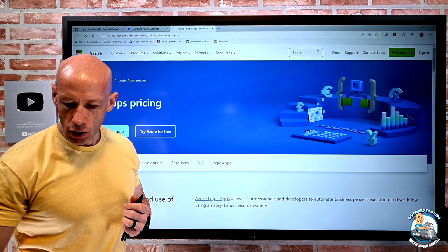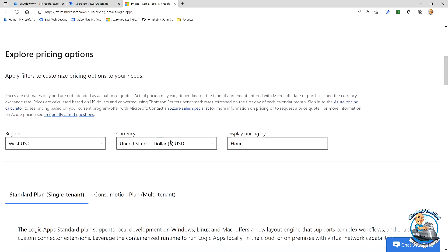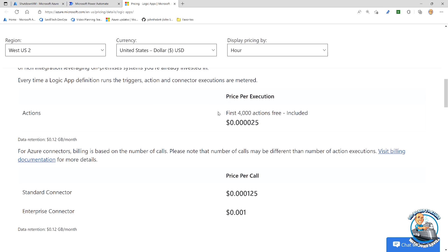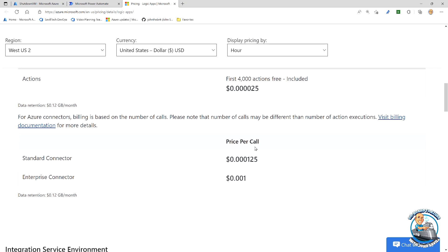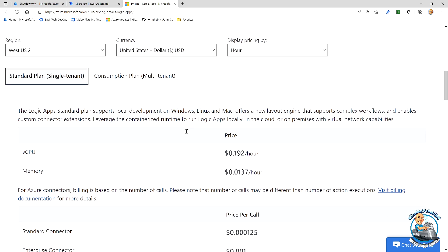If we actually stepped over for a second and looked at the pricing of Logic Apps, we can see that consumption-based nature. I can see, hey, with the consumption plan, I'm basically paying for the number of actions. I do get 4,000 actions free. And then you pay for calls to the different types of connector, both standard connector and enterprise connector. Or I can have a standard plan where I have that dedicated set of infrastructure on which my Logic Apps run. This makes the billing a little bit more predictable.